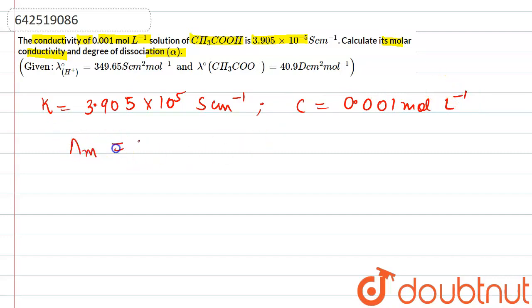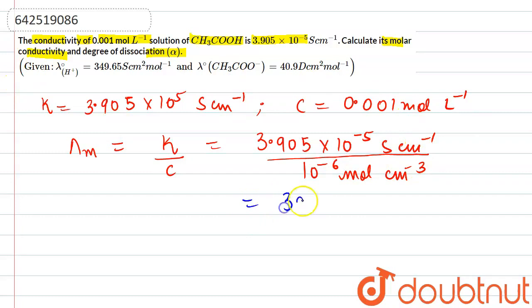So, using the expression of molar conductance, it will be equal to kappa divided by C. That is, putting the values: 3.905 x 10^-5 cm inverse divided by 0.01 mol-liter inverse. So, we have to convert it to mol-centimeter inverse. So, we will multiply by 10 raised to the power of minus 3. So, it becomes 10^-6 mol-centimeter minus cube. From here, the value comes out to be 39.05.